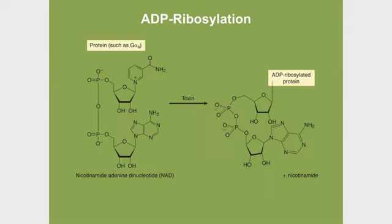That's ADP, linked to ribose, linked to niacin. ADP linked to ribose linked to niacin, all together, is NAD.